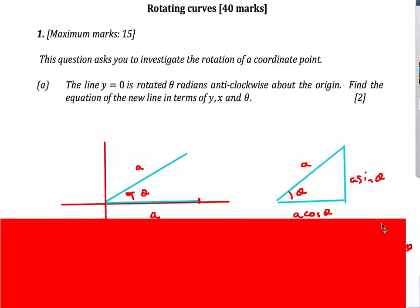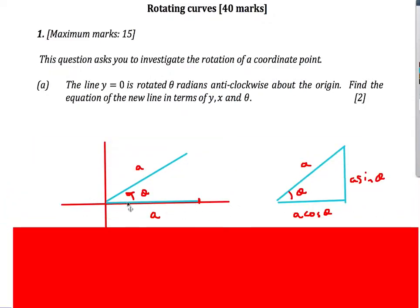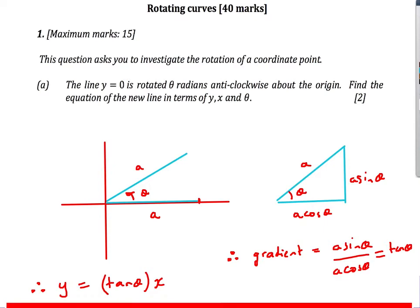Always start with a sketch. Here's my sketch — there's my line y equals zero. It has a length; let's cut off a little bit so it has a length of a. If I rotate it theta degrees anti-clockwise, it still has a length of a. You can see we've got a right-angled triangle, so this side is a·sin(θ) and this is a·cos(θ). To find the equation of the line: it goes through the origin so c equals zero, and the gradient is a·sin(θ) divided by a·cos(θ), which is tan(θ).